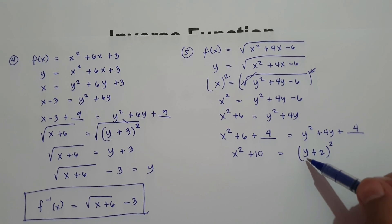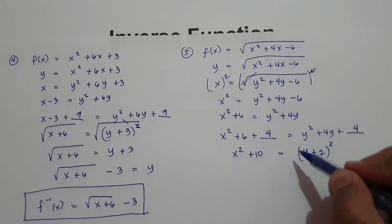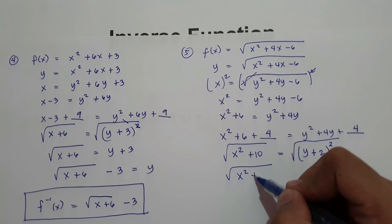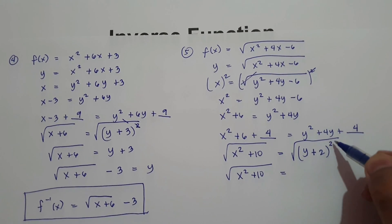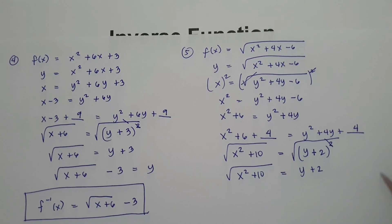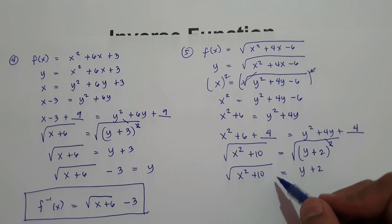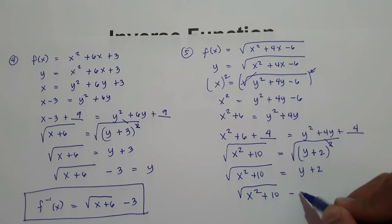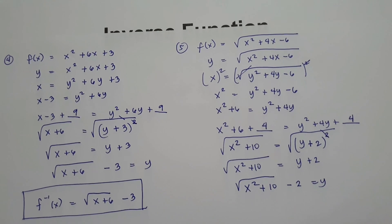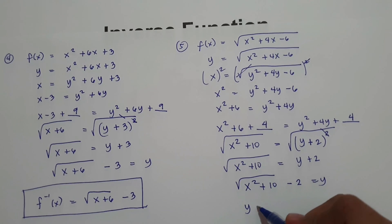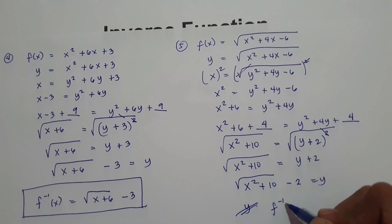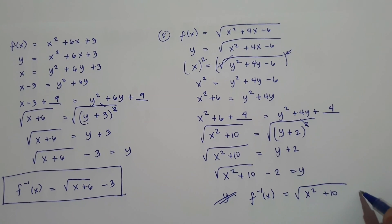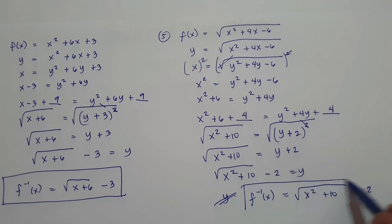To express this in terms of y, we cancel the exponent 2 by taking the square root of both sides. We have square root of x squared plus 10 equals y plus 2. Then move positive 2 to the other side: square root of x squared plus 10 minus 2 equals y. Our final answer is the inverse of the function is square root of x squared plus 10 minus 2.